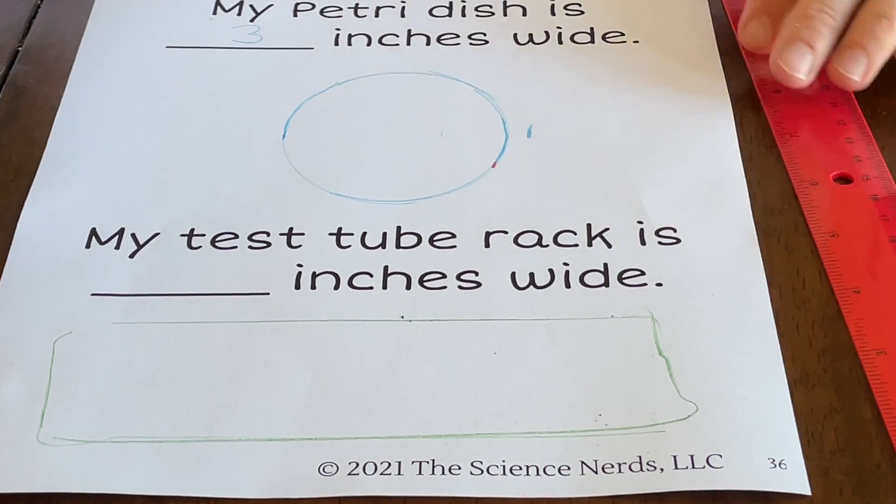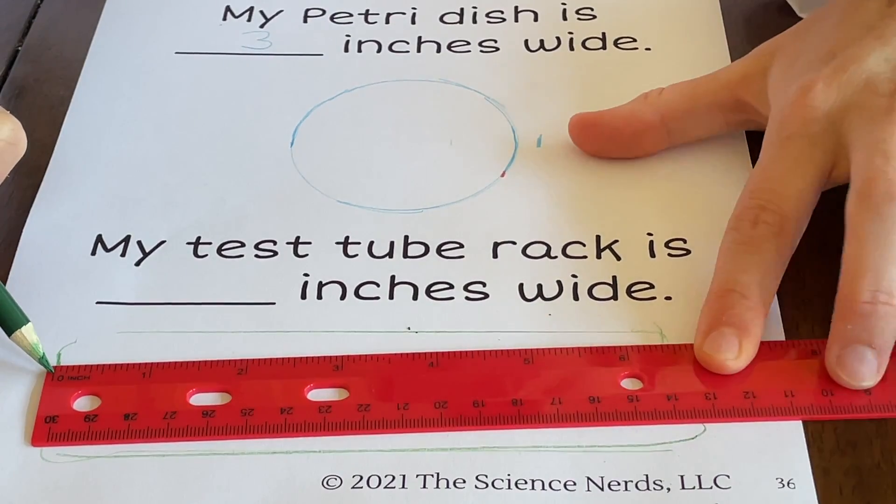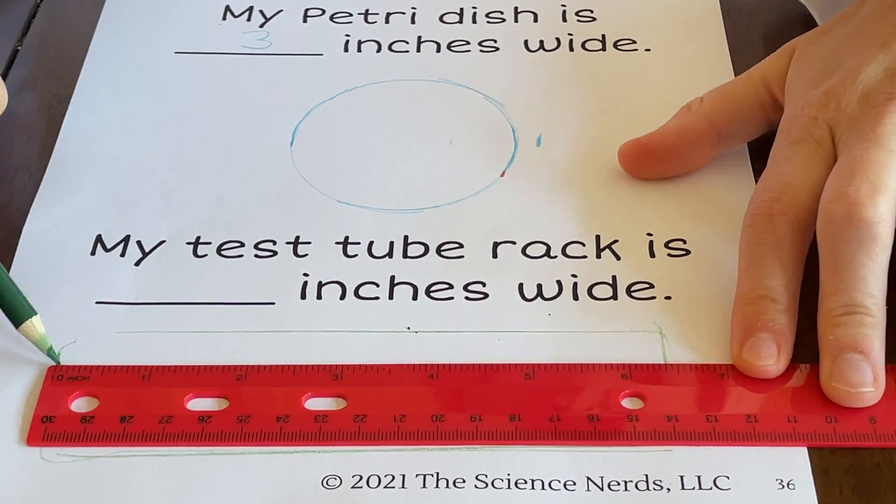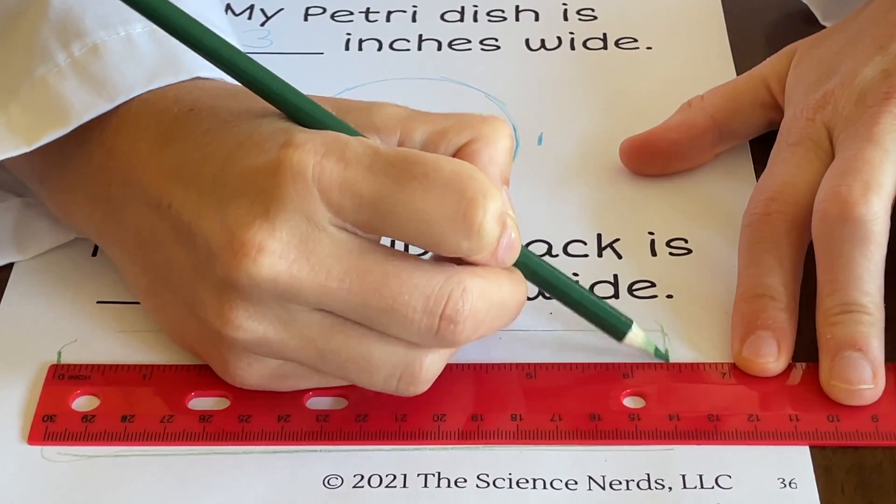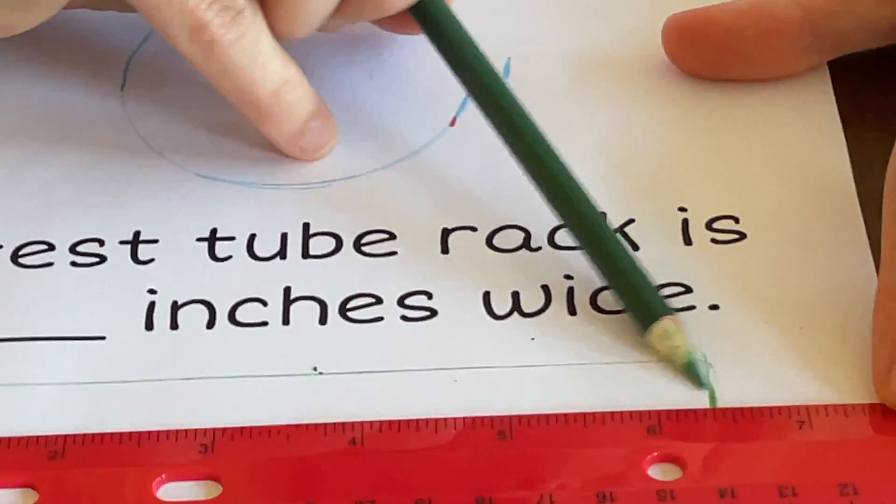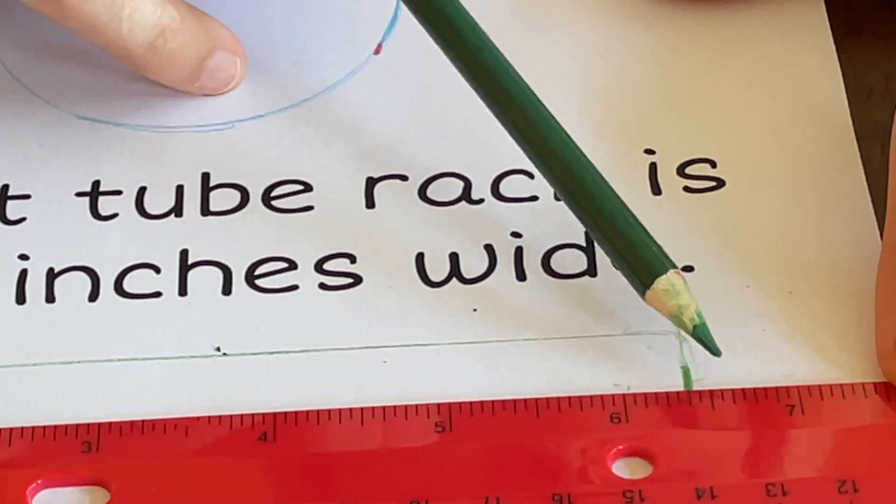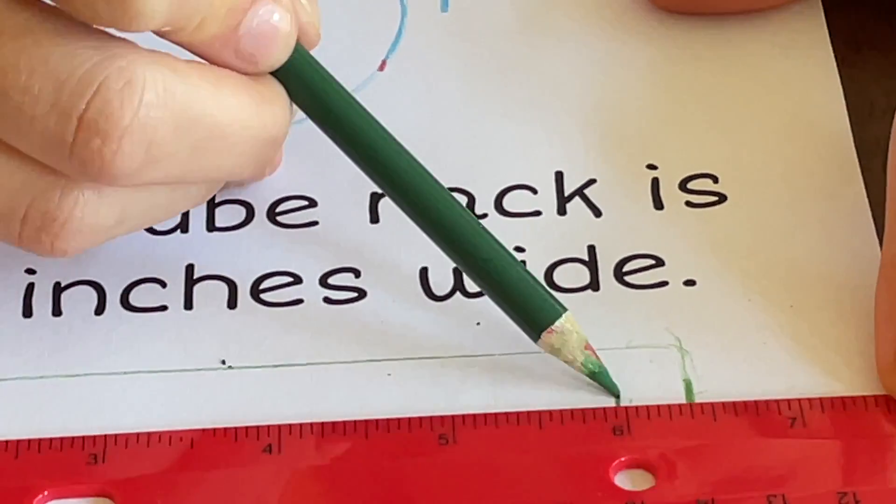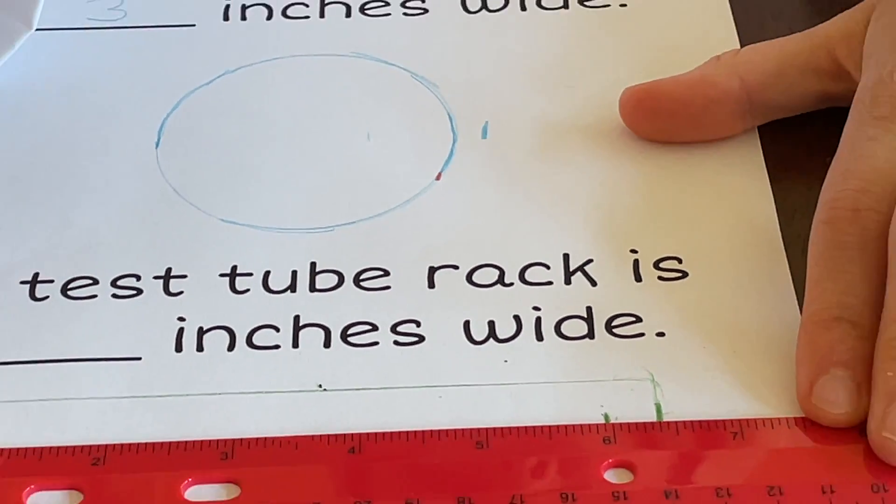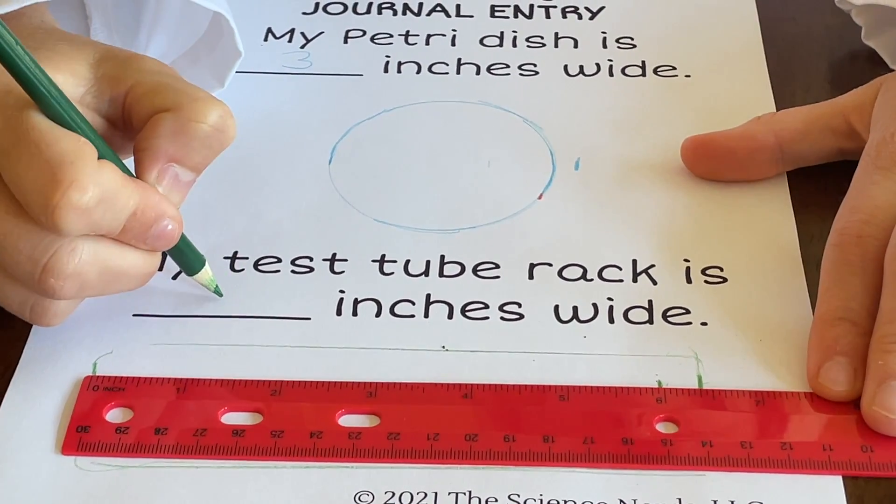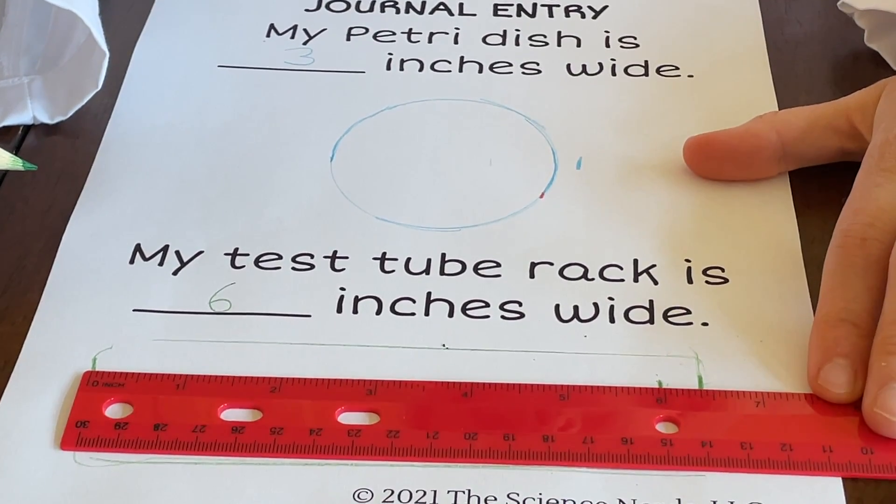Use your ruler to line up the zero at one end of your test tube rack tracing and the other end on the other side. Make sure you're using the inches, the bigger numbers. Mine goes right here. Do you think that's closer to the six or the seven? It's pretty close. It is pretty close. It's almost halfway, but I think it's a little bit closer to the six. I agree. If you drew your test tube rack a little wider, you may have gotten seven, and that's okay. Write your answer in the blank above. Pause the video until everyone has their answer written.